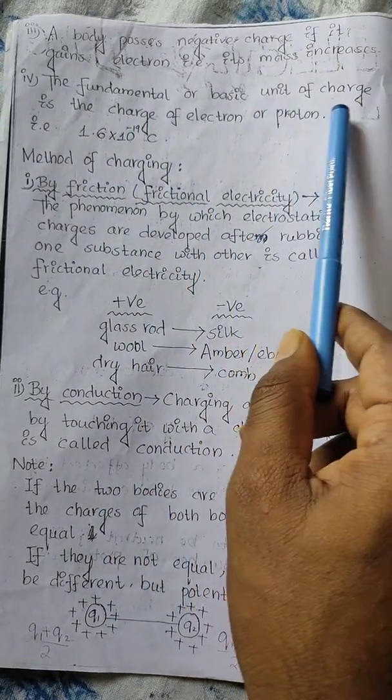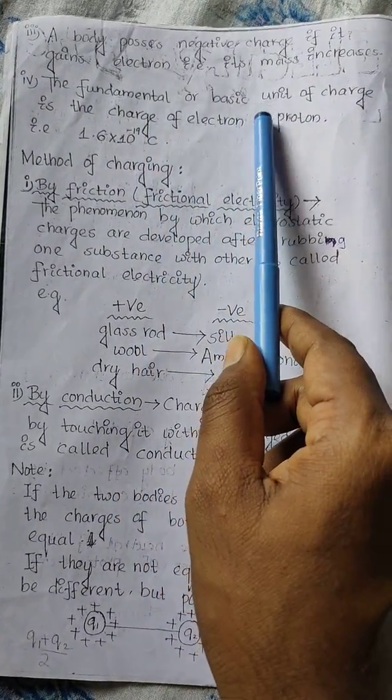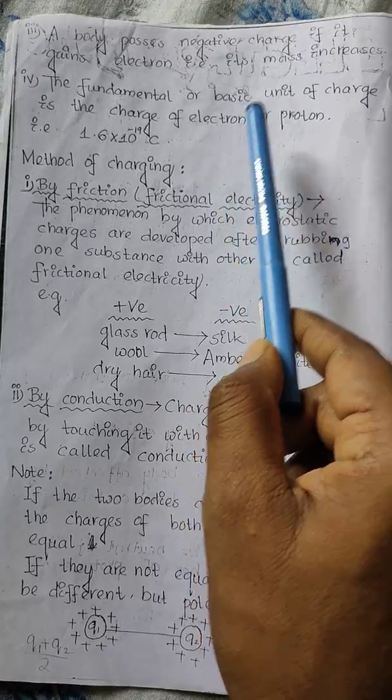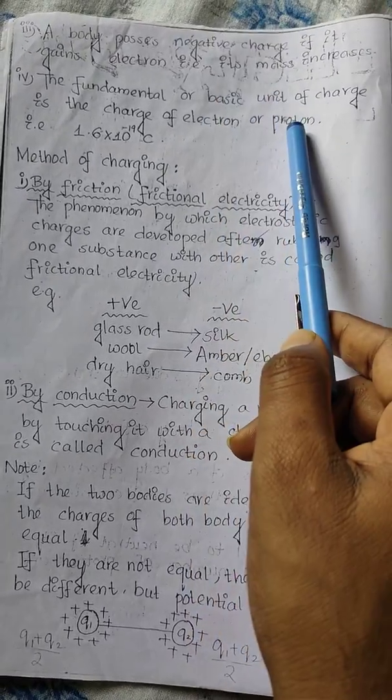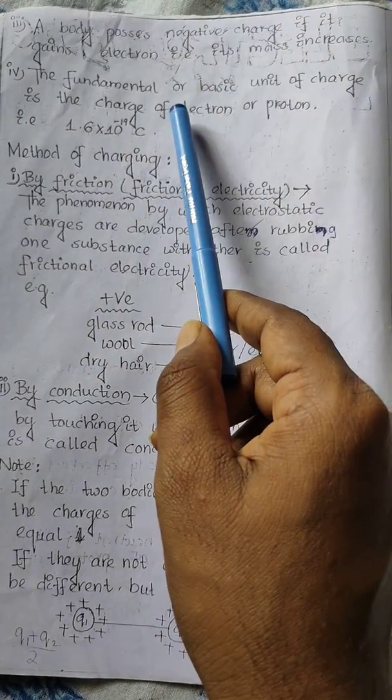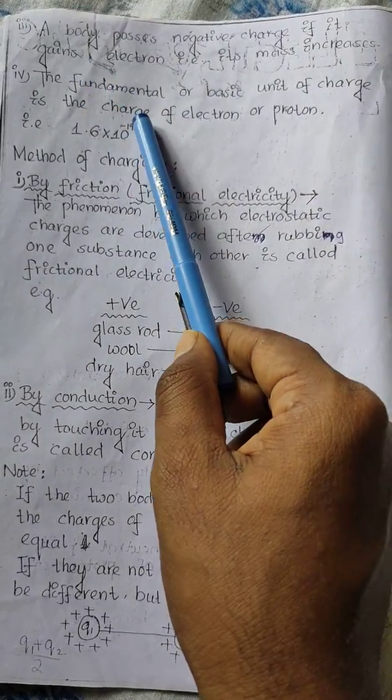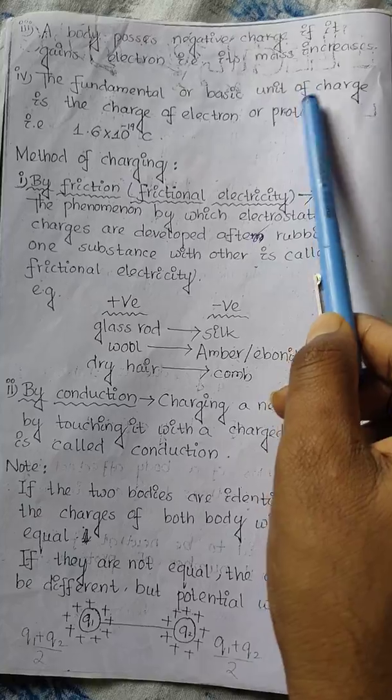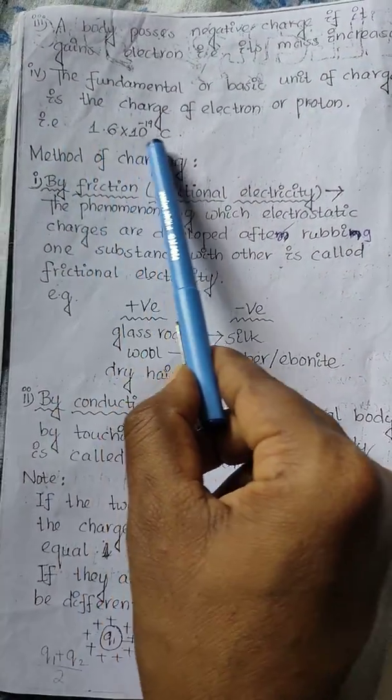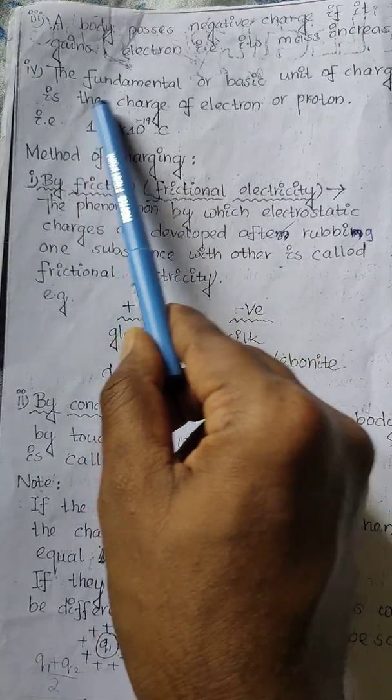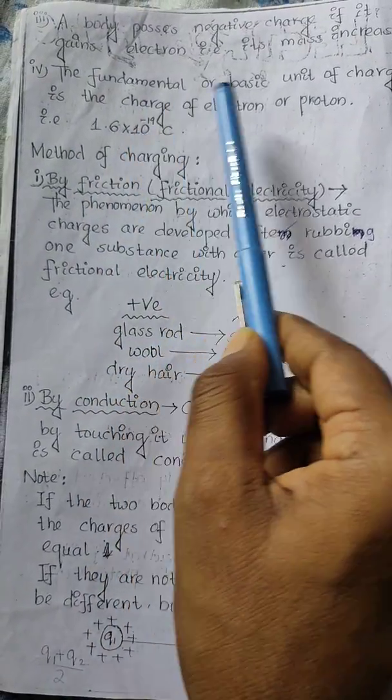The fundamental or basic unit of charge is the smallest charge on particles like electrons and protons. The minimum charge is the charge of one electron or one proton, which is 1.6 × 10^-19 coulombs. No charge smaller than this is possible.